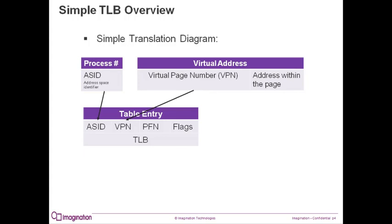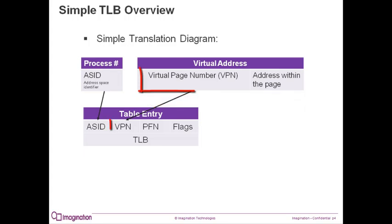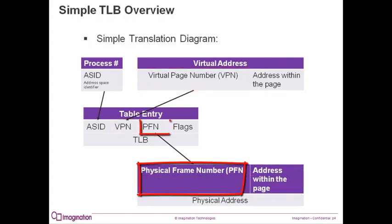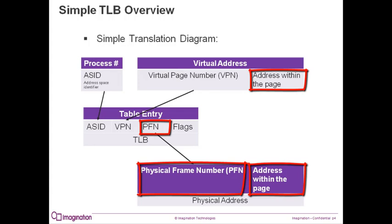A typical page size is 4K. This means that the lower 12 bits of the address will be the index within the page, and the upper 20 bits will be the virtual page number, or VPN. The VPN is used to select the TLB entry with the correct virtual page number. The TLB will then use that entry's physical page number, or PFN, combined with the lower bits of the virtual address to translate and complete the physical address.